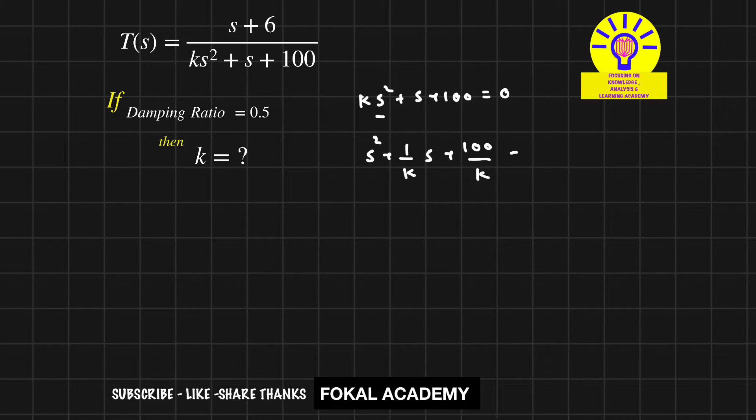We know the standard equation is s²+2ζωₙs+ωₙ²=0. Comparing these two equations, we get 2ζωₙ=1/k.